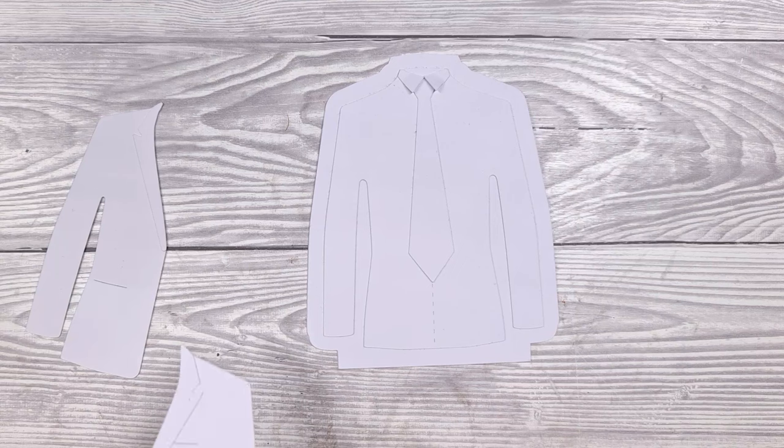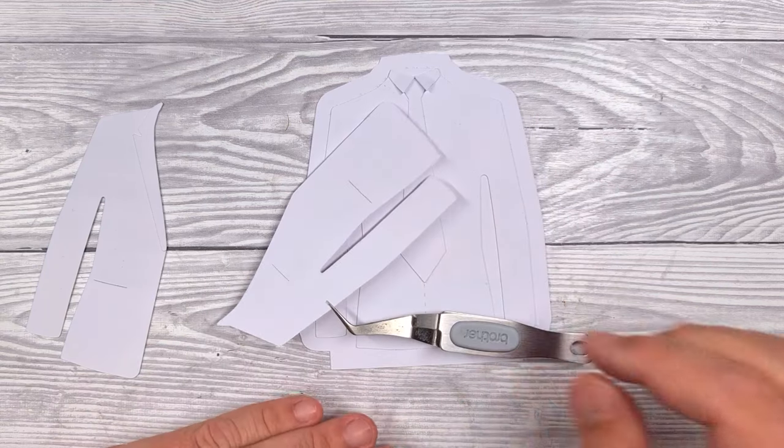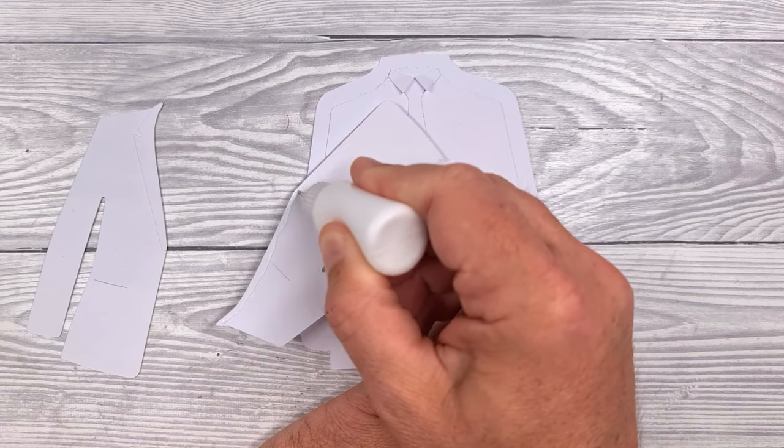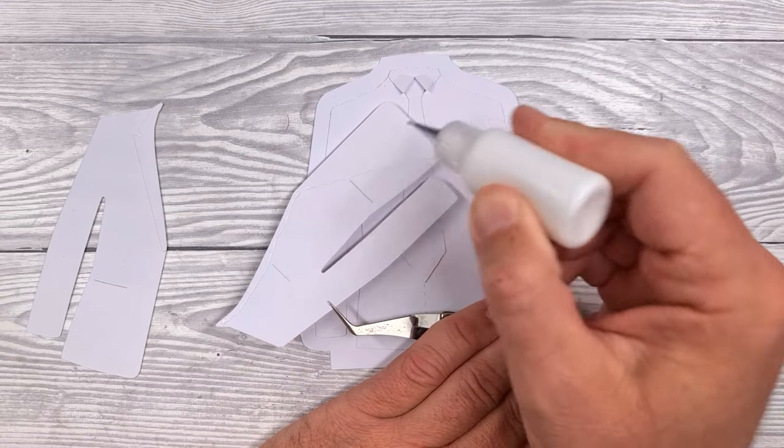When you've got the shirt in position, again, you can decide if you're using a vest or a waistcoat. Pop those down if you are; if not, go in with your jacket pieces.